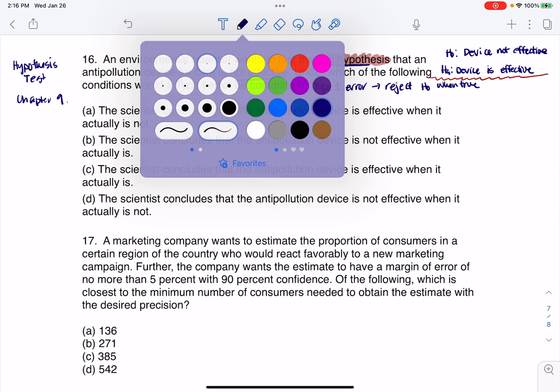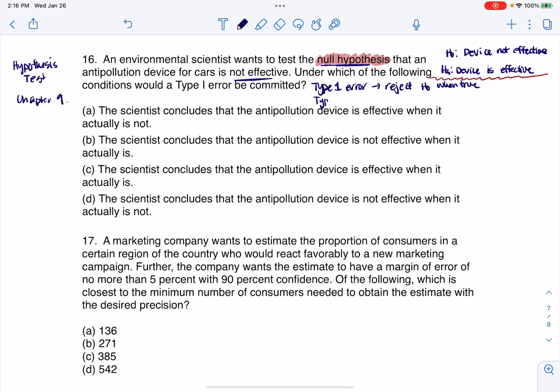If you want to do the type 2, I mean, I know they didn't ask us for a type 2 error here, but type 2 error is when you fail to reject the null and it's false. All right.